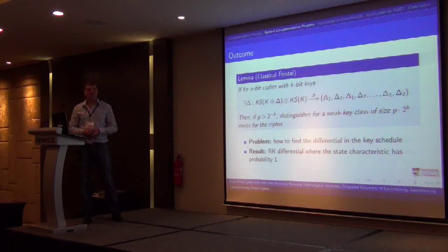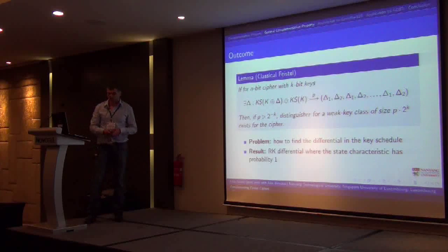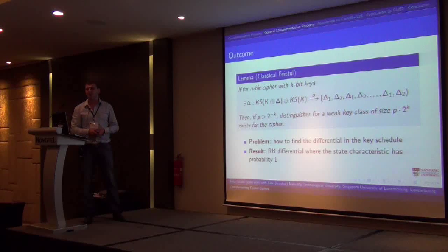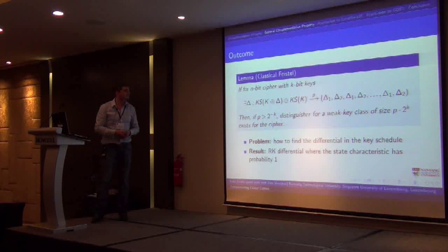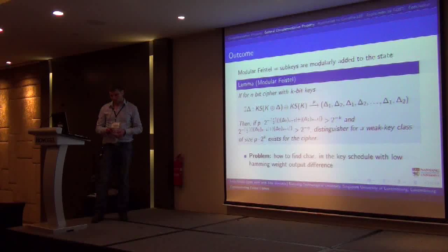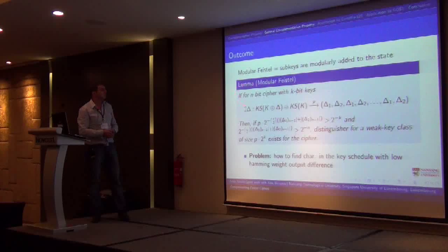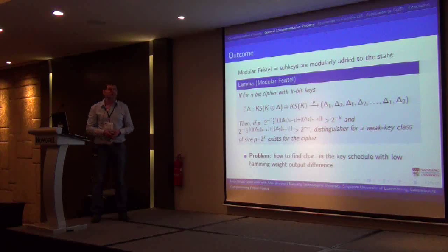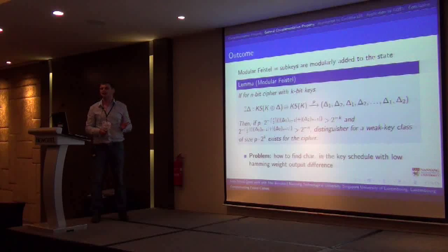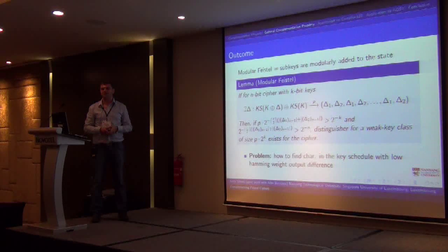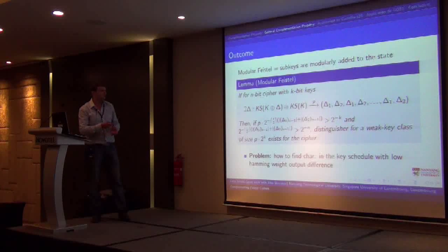The problem has been reduced significantly. We only focus on the key schedule, no more state — as long as the round function in the state goes: first XOR the sub-key and then some transformations, only one XOR at the beginning of the round. This is for what we call classical Feistels, where you XOR the sub-key. For modular Feistels, where you modularly add the sub-key, a similar observation holds, but now we have to take into account the differential in the state as well. You don't want to produce arbitrary alternating differences in the sub-key, but you want these differences to have a low Hamming weight, so you pay as little probability as possible.